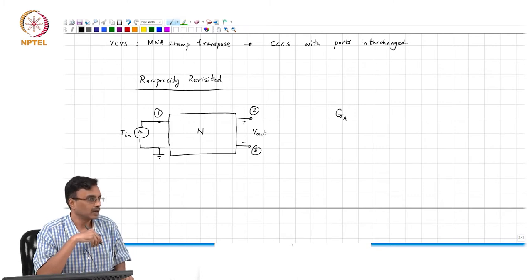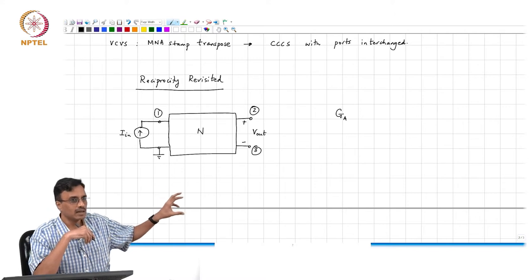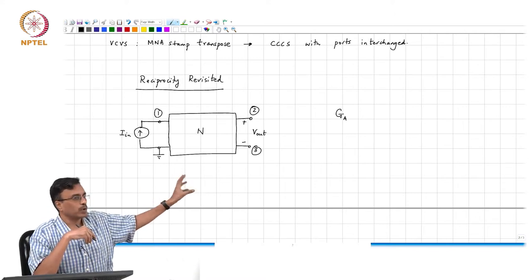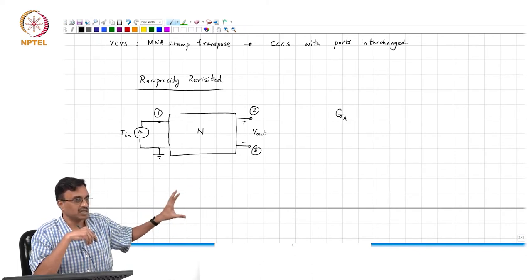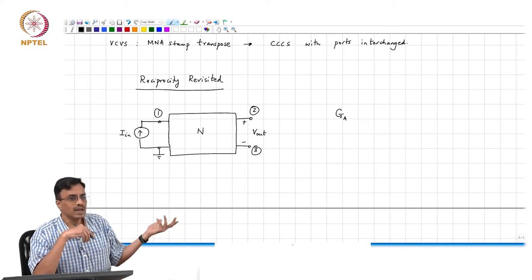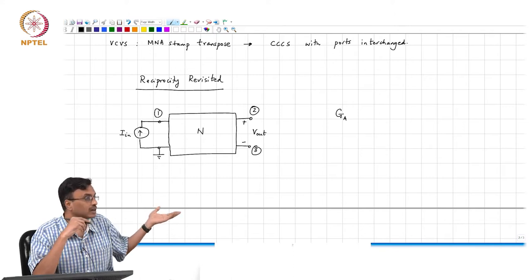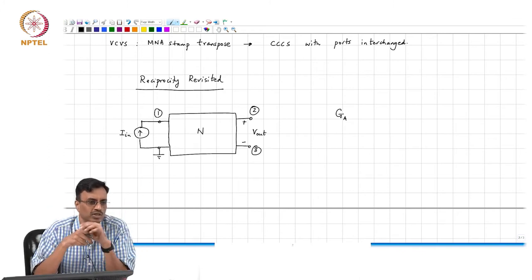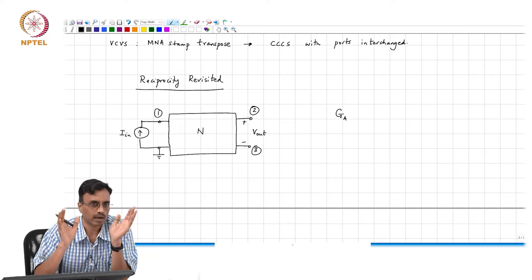The augmented conductance matrix will contain entries corresponding to the conductances and the controlled sources and all that stuff which are potentially inside this box. And the unknowns will be all the node voltages and the currents through all the controlled sources or the zero voltage sources inside the box.